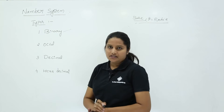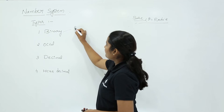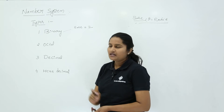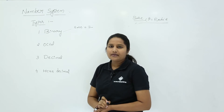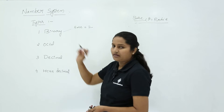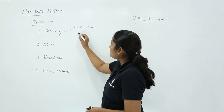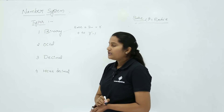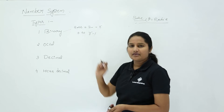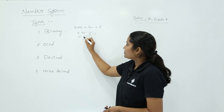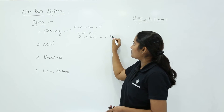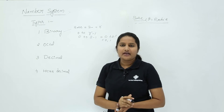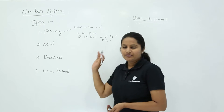First, we will take the binary number system. For binary number system, the base or radix is equal to 2. That means the value representing this binary number system is 2. The maximum value of digits we can use is defined by the formula 0 to r minus 1, where r represents the base or radix. So the digits we can use are 0 to 1 — that is, 0 and 1. This is the reason why we have only 0 and 1 in this number system.